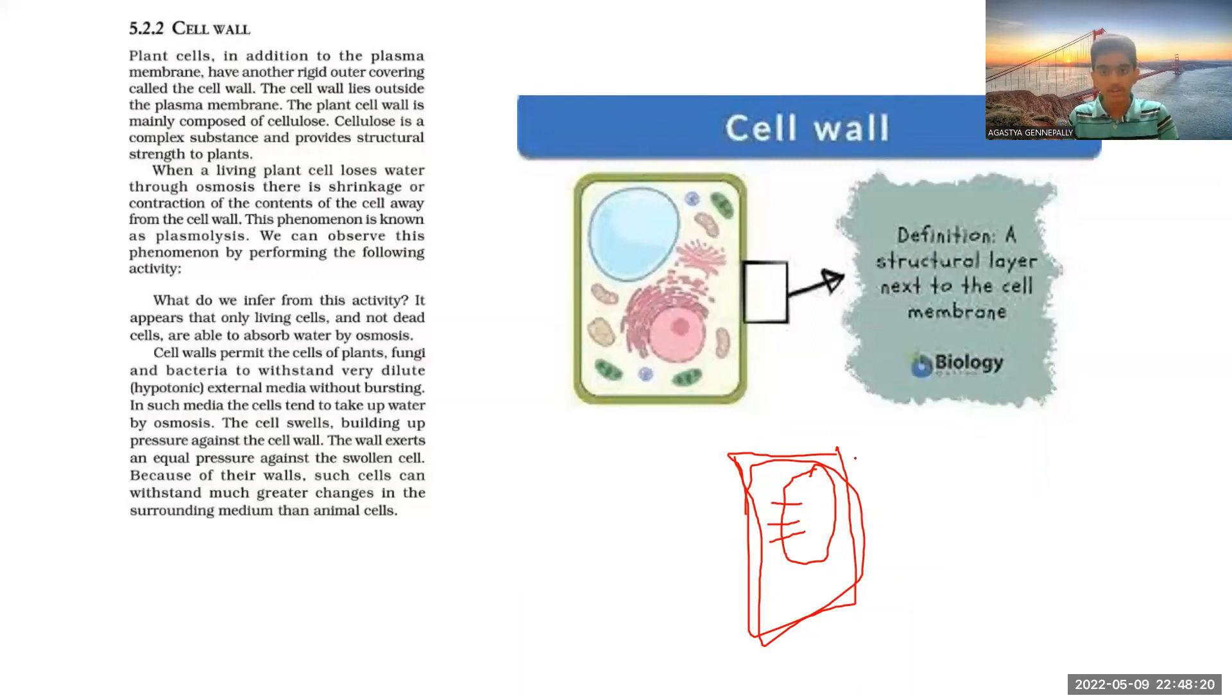But in animal cells, the cell membrane is not that rigid. It's not rigid actually, it will burst. That is the difference we are noticing here. So that's all about the cell wall.